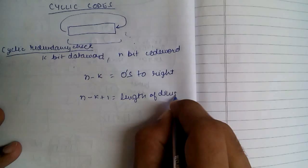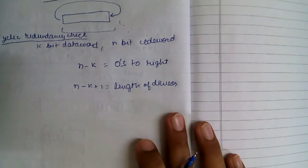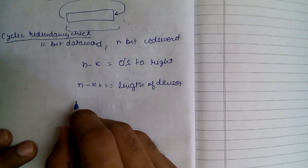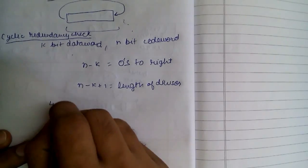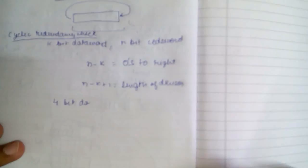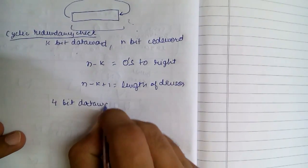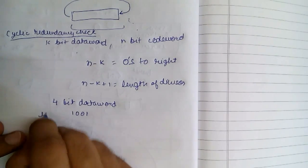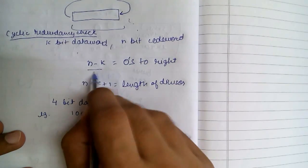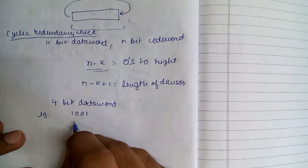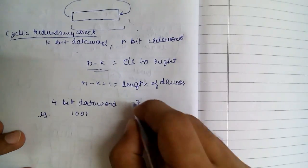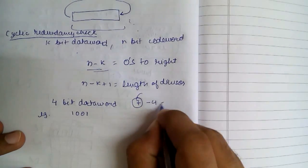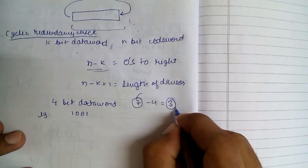So let's say we have a 4-bit data word: 1 0 0 1 for example. We are going to add n minus k zeros to the right. Since we are making a 7-bit code word, that is 7 minus 4 equals 3, so we are going to add 3 zeros.